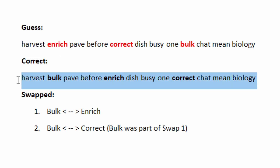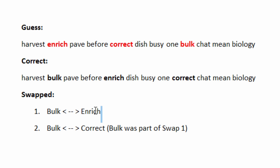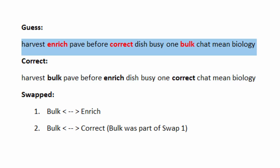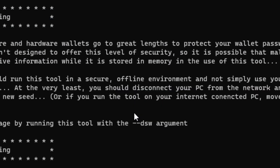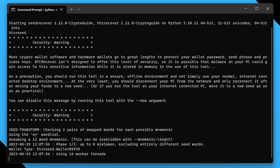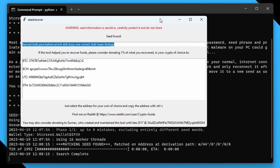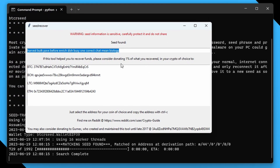In this instance we're providing a guess that has three words that are actually incorrect. Originally we started with a seed and swapped 'bulk' and 'enrich', then made a second swap with two other words in different positions — so we need to check for two swaps. We put that in as our guess, say okay, it runs, and there we go. Because we started it with the graphical interface, the result also pops up in a graphical text box.